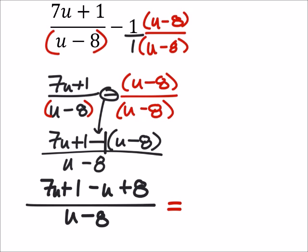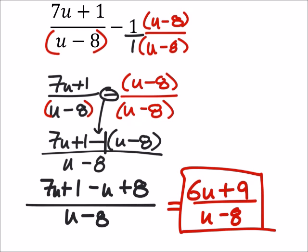And then this would simplify just by combining like terms. I got a 6u plus 9 over u minus 8. I don't think that can be simplified any further.